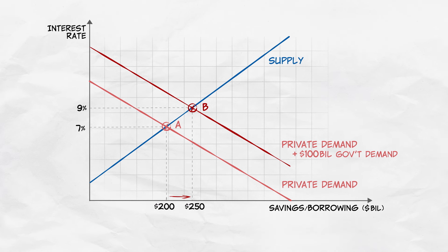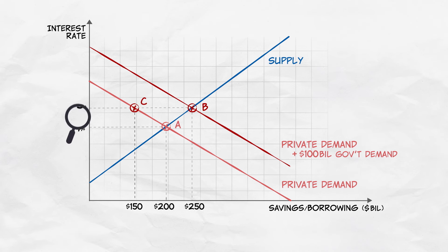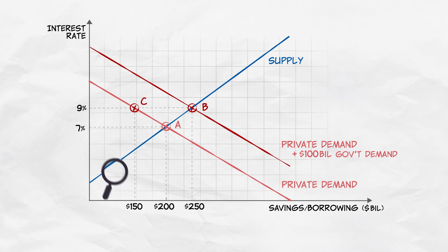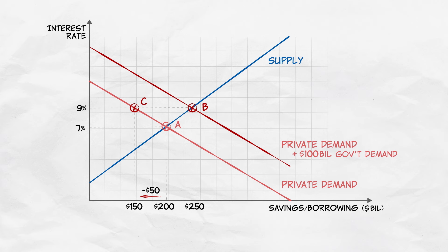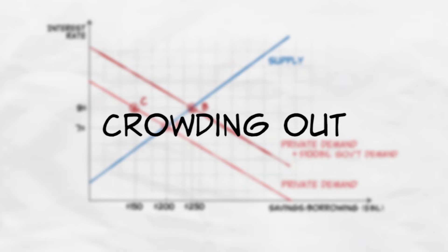Now, remember that if savings increases by $50 billion, that means that private consumption is falling by $50 billion. If we're saving more, we're consuming less. And because borrowing has become more expensive due to that higher interest rate, private investment will also fall. At a 9% interest rate, we can see that the private demand for loanable funds is $150 billion, $50 billion less than it was at an interest rate of 7%. We call these two effects crowding out.